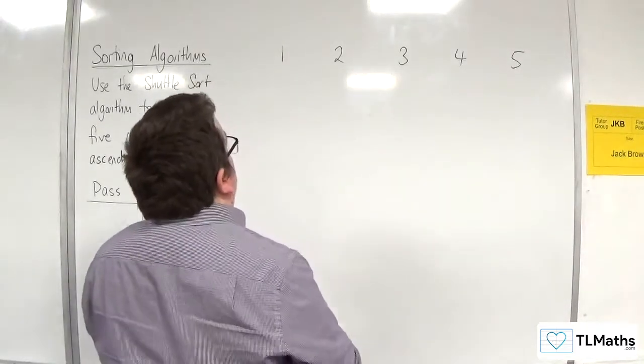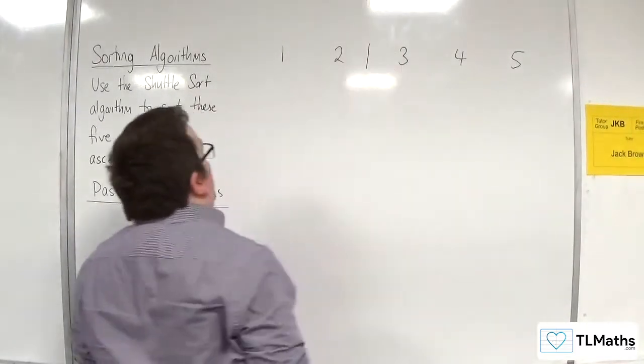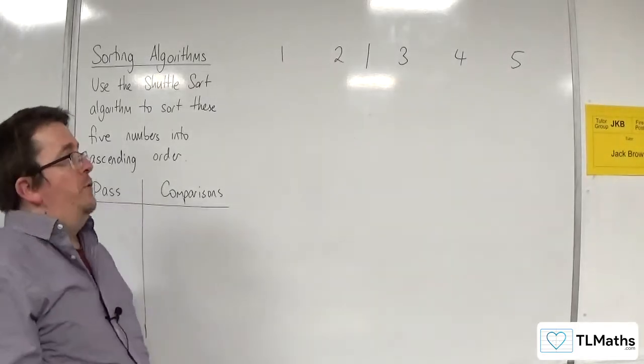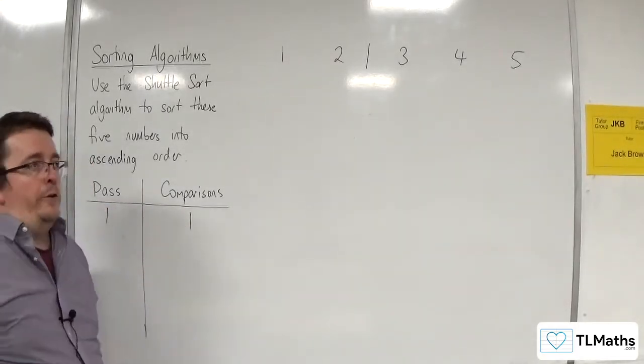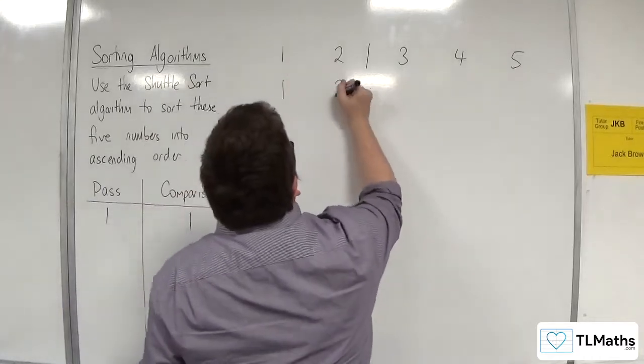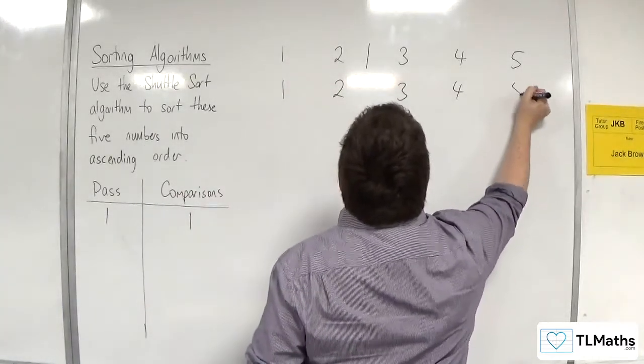First of all, we're going to compare 1 and 2 together. They're already in the correct order, so no swap is required. On the first pass we make 1 comparison. So we have 1, 2, 3, 4, 5.